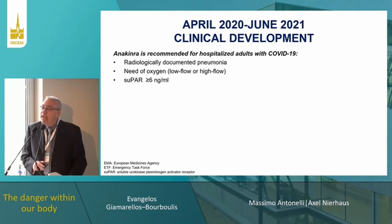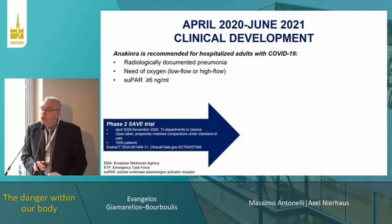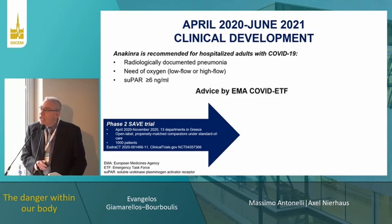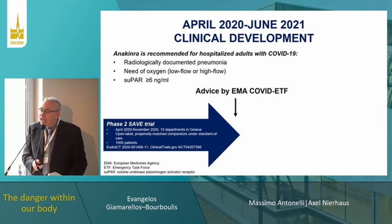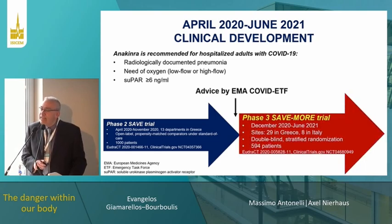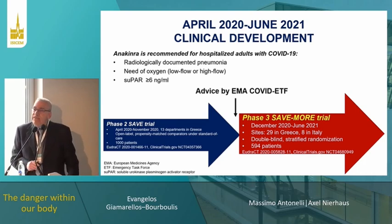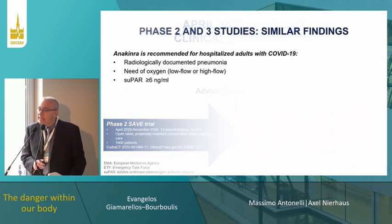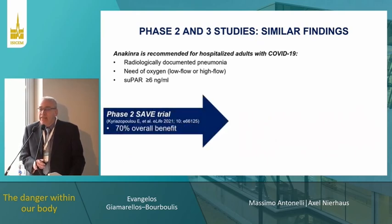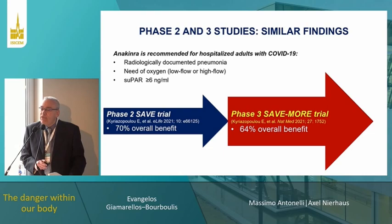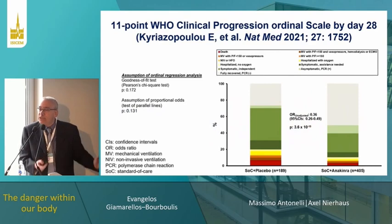The labeling specifies: patients with radiologically documented COVID pneumonia requiring oxygen (low or high flow) and SUPAR of 6 or more. The indication was led by a platform-like phase 2 trial on almost 1,000 patients, followed by advice from the COVID EMA task force, and then a randomized phase 3 trial. The overall benefit in the phase 2 program was 70% in favor of the drug, and 64% in the phase 3 program.